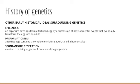Some other early historical ideas surrounding genetics: it wasn't until the 1600s — going from about 322 BC up to the 1600s — that strides were made to really understand the biological basis of life. Early scientists proposed an idea called epigenesis, which states that an organism develops from a fertilized egg by a succession of developmental events that transforms the egg into an adult.